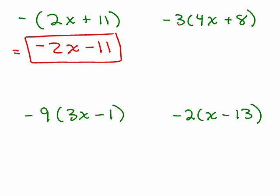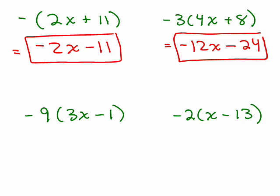Second one, negative 3 times 4X will be negative 12X. Now, what's going to happen here? I've got a negative and a positive multiplied together. That'll end up being a minus 24, since that's 3 times 8.